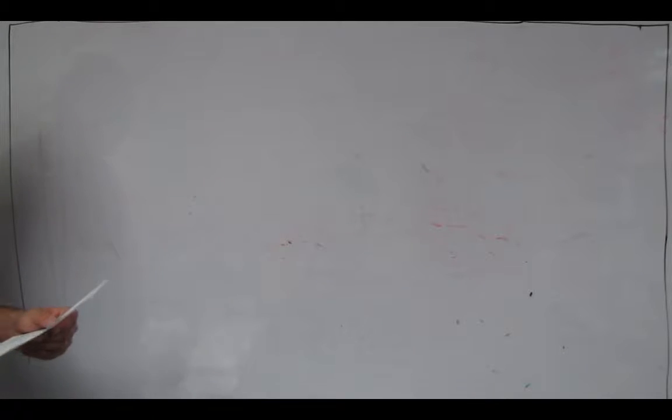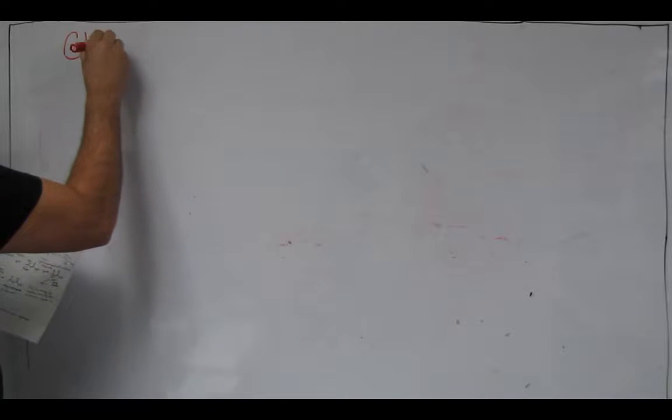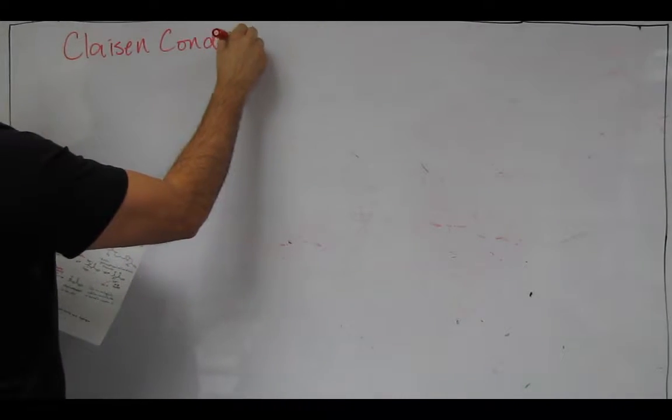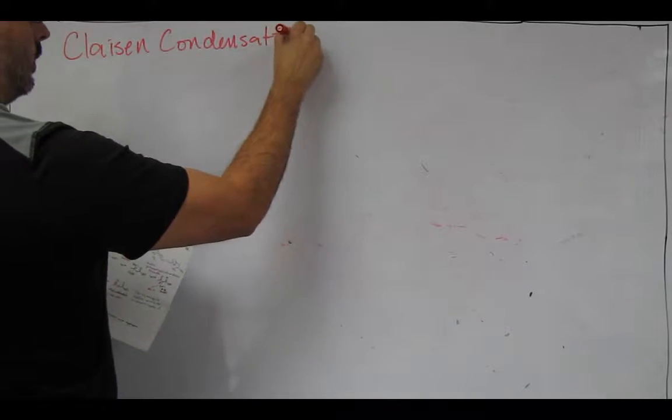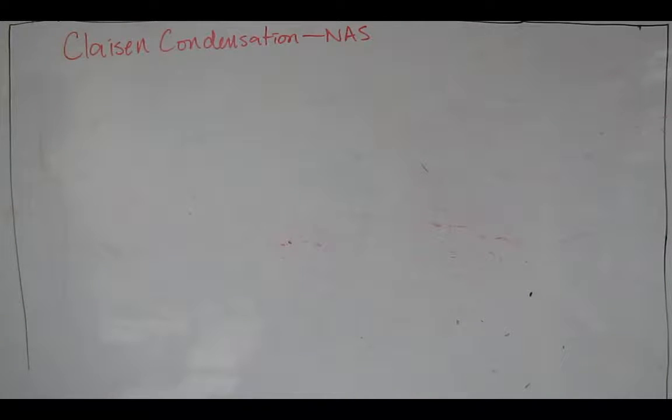We're going to talk about the Claisen condensation, which is a nucleophilic acyl substitution in which we are generating an enolate and then as the electrophile we are using an ester.